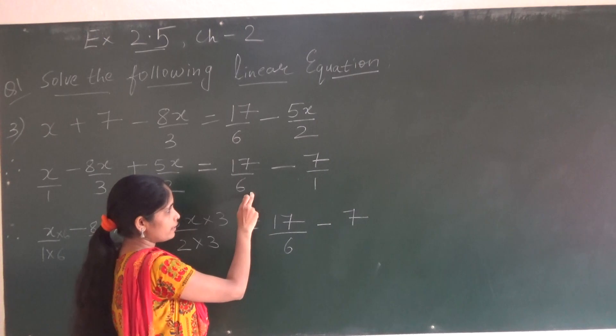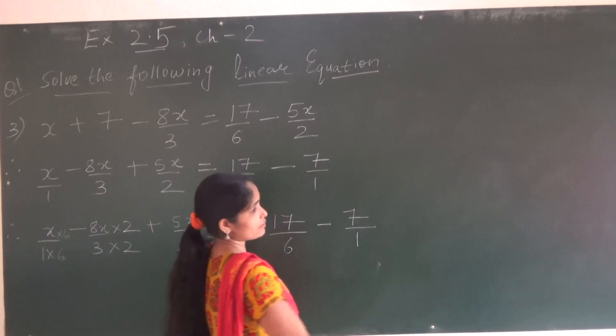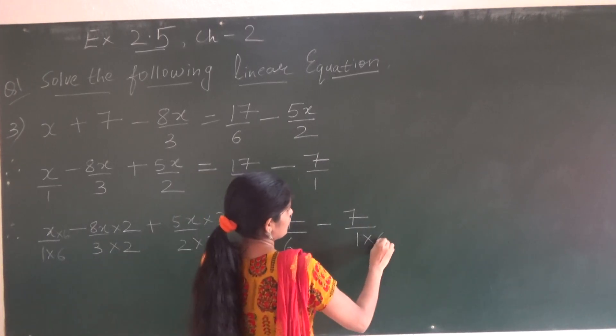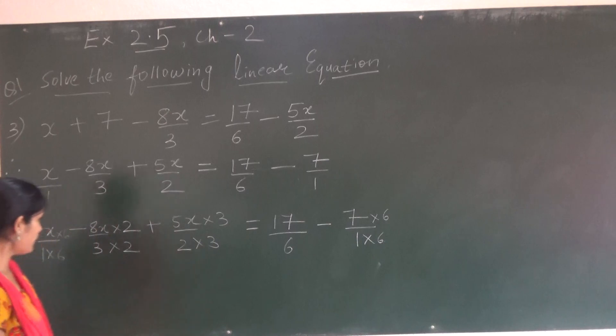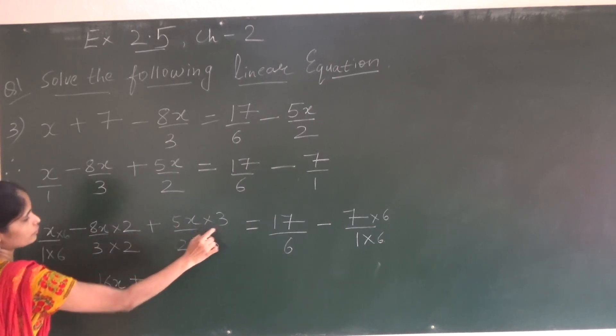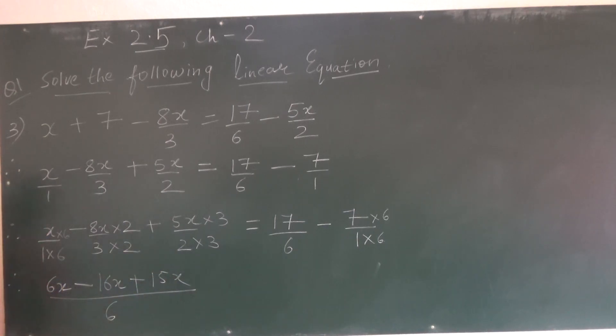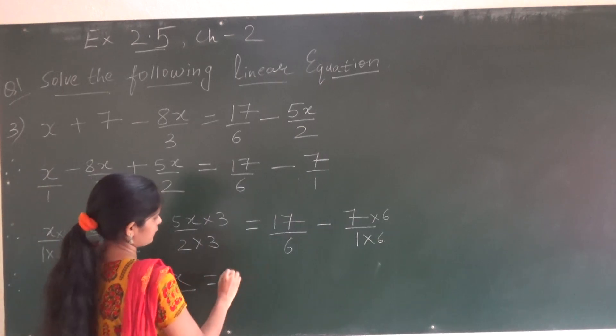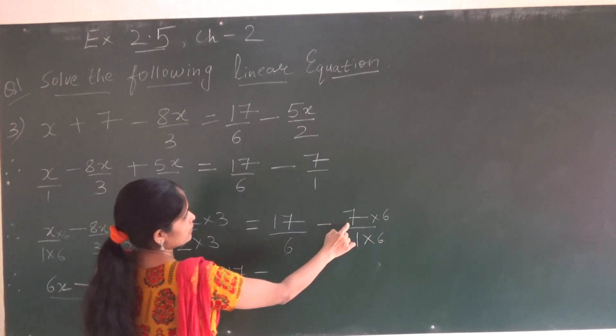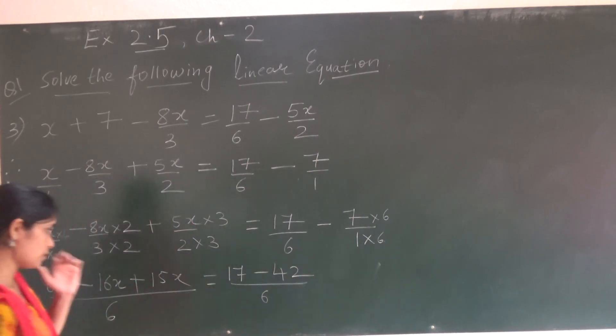So 17 upon 6 minus 7. Here already 6 is there, so we don't have to multiply. Here 1 is there. So 1 how many times 6? 6. So here we are multiplying by 6. Now next step. x into 6 will be 6x minus 8 2's are 16x plus 5 3's are 15x and whole upon 6. Our LCM. And this side 17 minus 7 6's are 42 and whole upon 6.